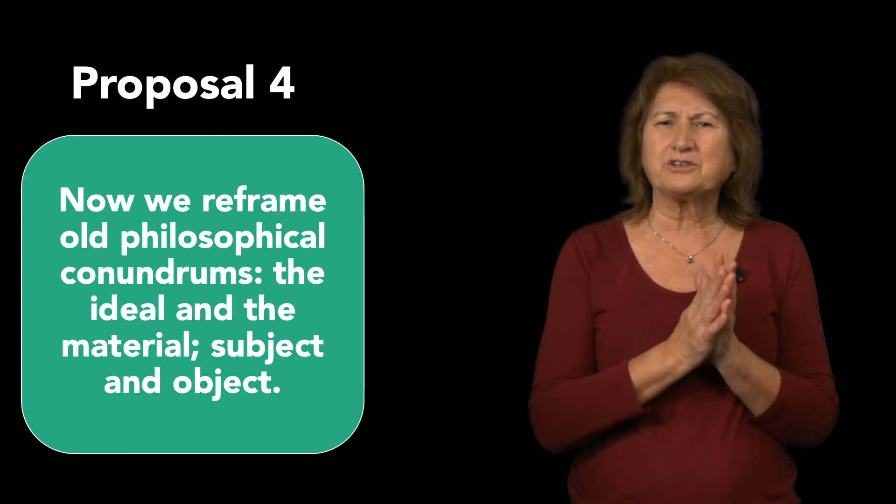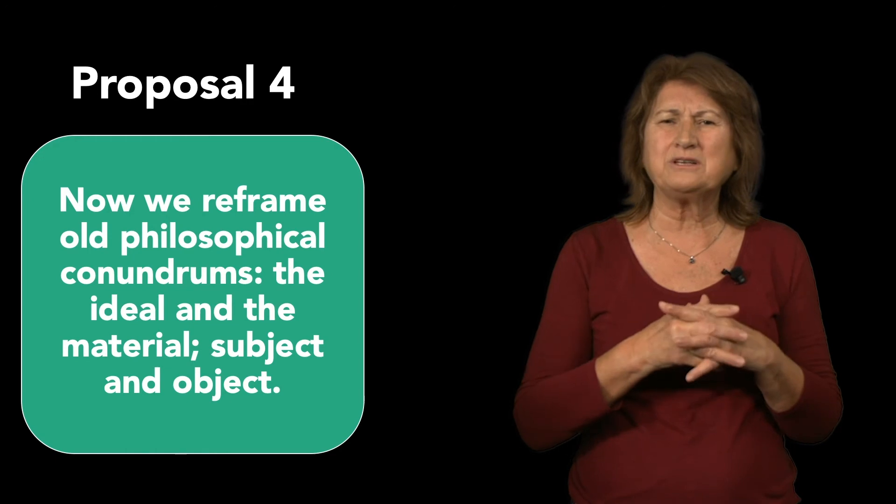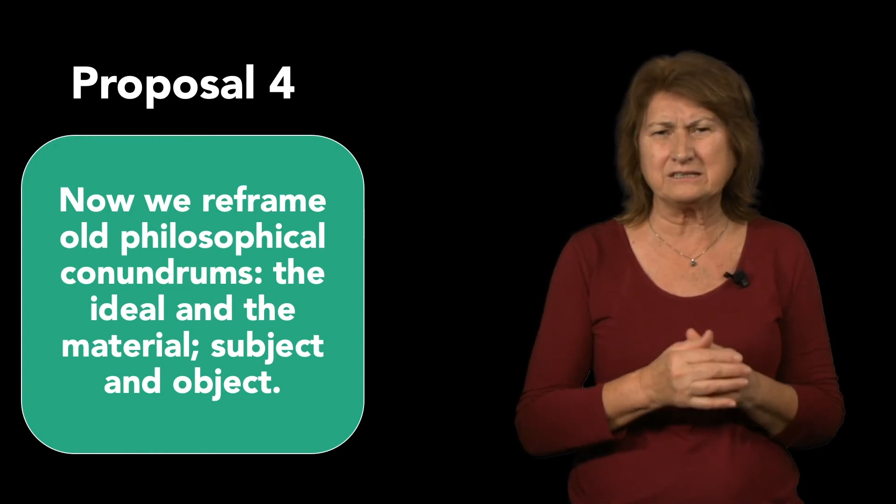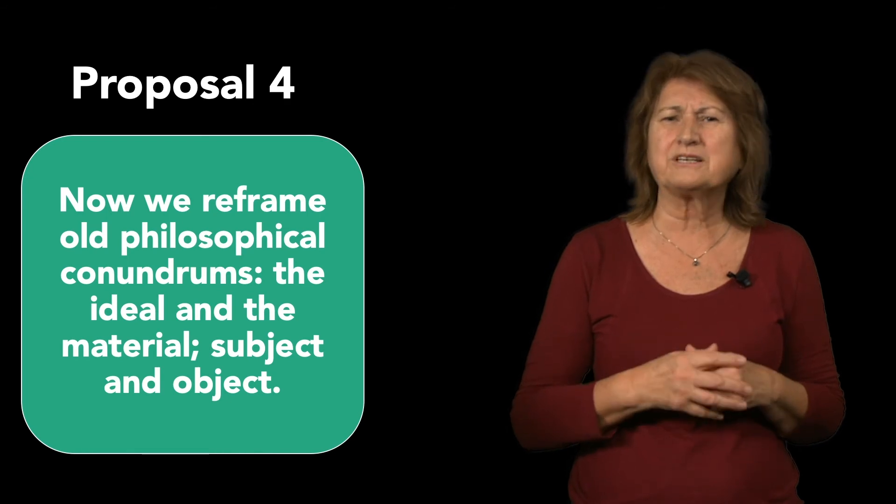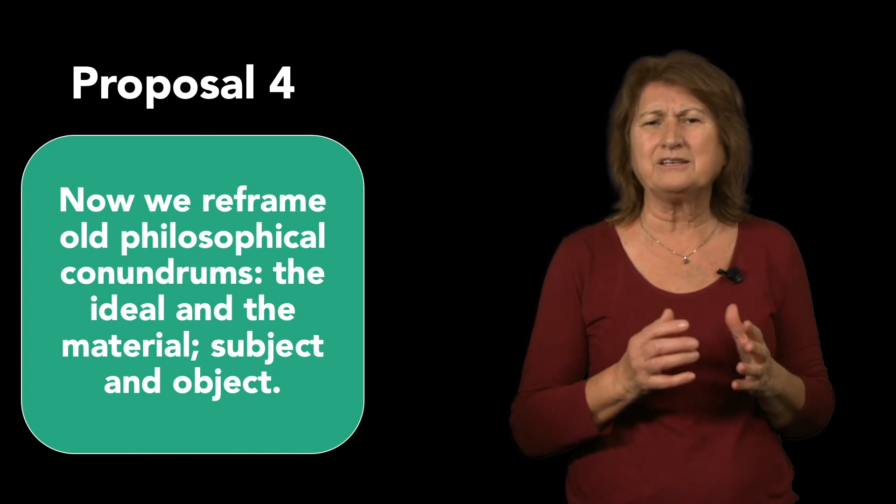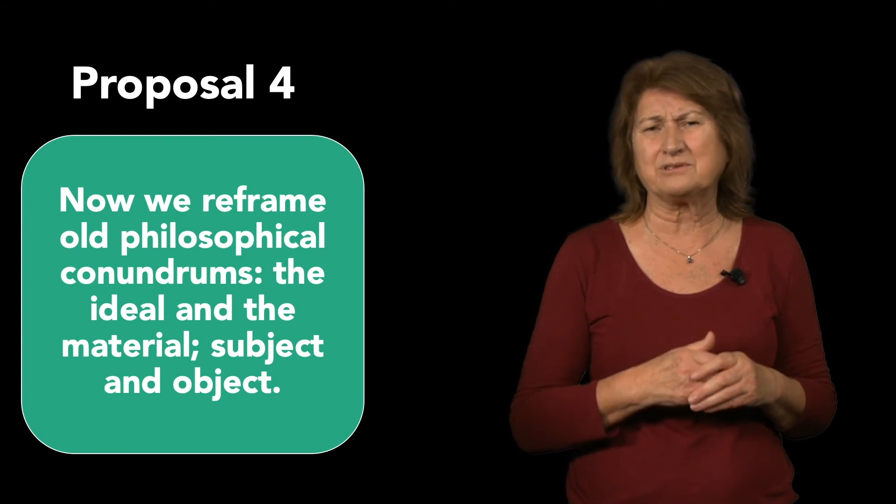Now for our fourth proposal. One of the great tensions in modern Western philosophy is between the antinomies that are loosely called materialism and idealism. In the two volumes that go with these videos, we also give Indian, Arabic, and indigenous examples. Here are the archetypical protagonists.